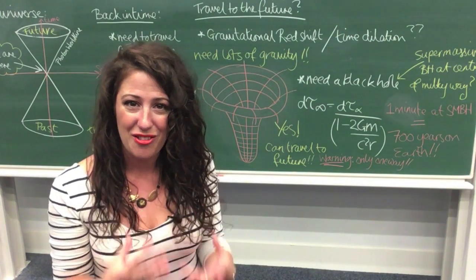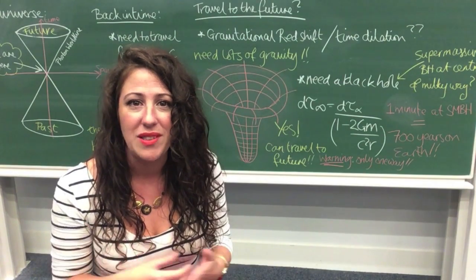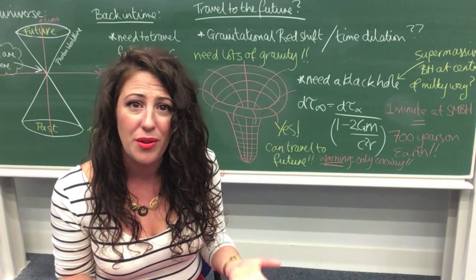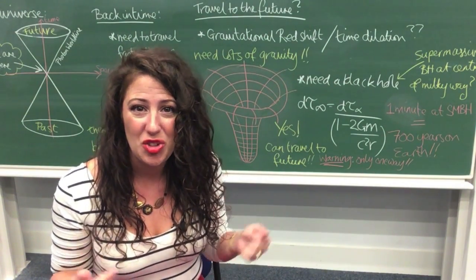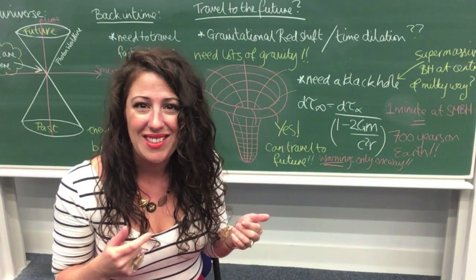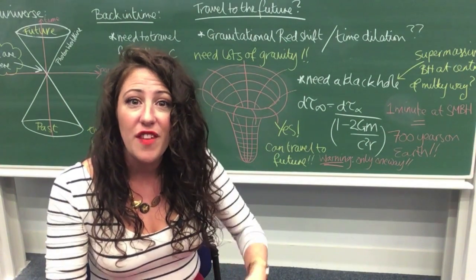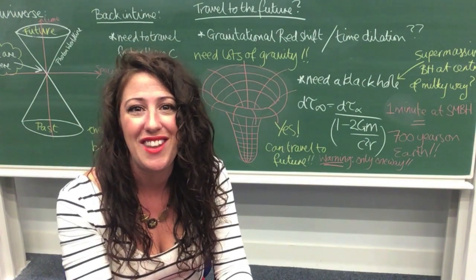Time passes slower in a gravitational field. Now, this has quite profound consequences. For example, the Earth's gravity is strongest at the centre of the planet. So that means that our heads are ageing quicker than our feet because our feet are closer to the centre of the Earth.